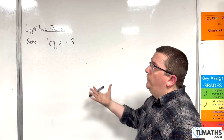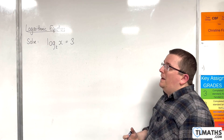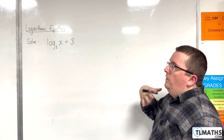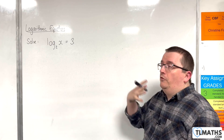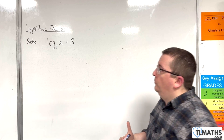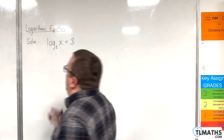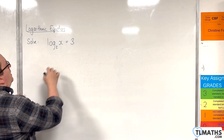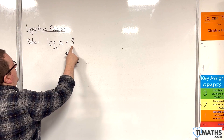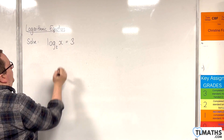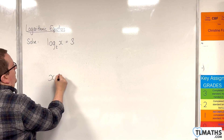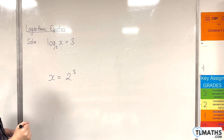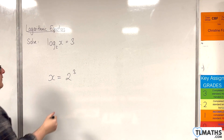In this video I want to solve log base 2 of x is equal to 3. We've learned about going from logarithmic form to exponential form, and that's precisely what we're going to do. We write that as 2 to the power of 3 is equal to x, so x is equal to 2 cubed, which means x is equal to 8.